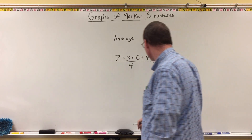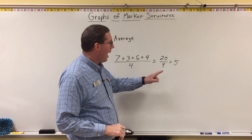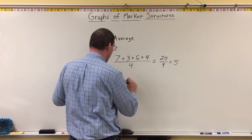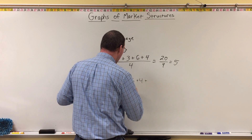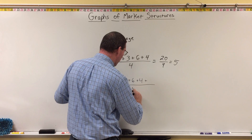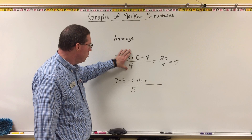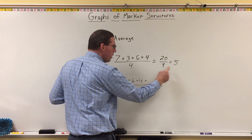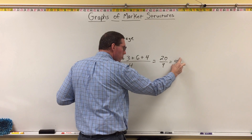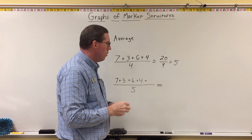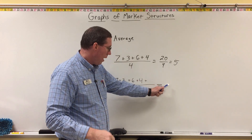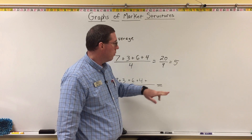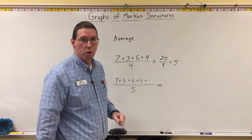What I want to review is the idea of what happens to the average when you add more numbers. What if I were to do another average with the same numbers — 7 plus 3 plus 6 plus 4 — and I add one more number, so I divide by 5. One of three things is going to happen to your new average: it's either going to be larger than your previous average, the same as your previous average, or smaller than your previous average.